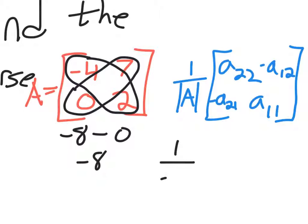So we're going to multiply the matrix by 1 over negative 8. Now it goes on in here.